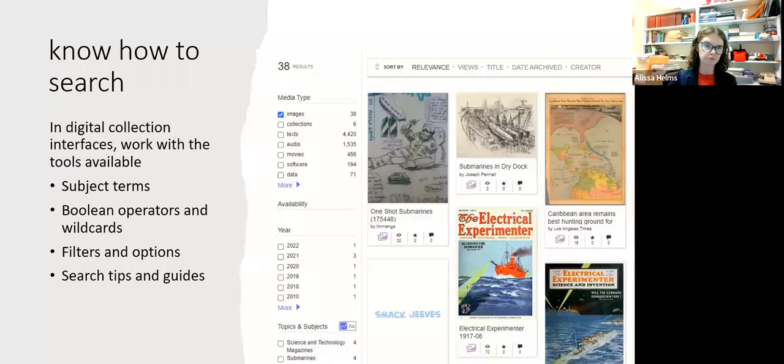So then you want to know how to search. Obviously for most digital collection interfaces the tools are going to be lackluster so you kind of have to work with what you've got. There may be subject terms to look for. Use Boolean operators and wildcards - so use AND, OR, and NOT to connect keywords to get more precise results.